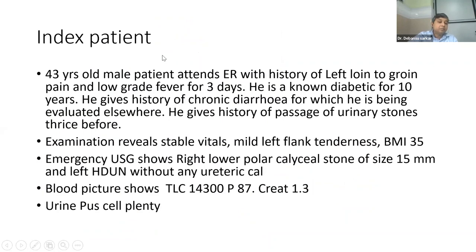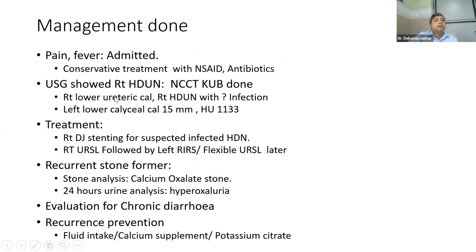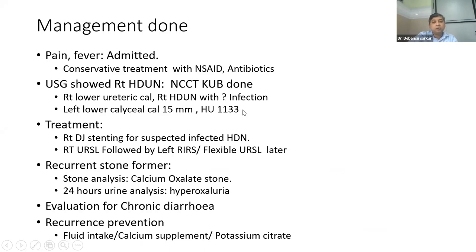Returning to our index patient — how was he treated? This patient had pain, fever, and signs of sepsis, so he was admitted, managed conservatively with IV fluids and antibiotics. He had one-sided inferior caliceal stone and the other sided hydroureteronephrosis. To know what caused the hydronephrosis, a CT was done in emergency, which showed a right lower ureteric calculus — that was the reason for hydronephrosis which was missed on USG. There were signs of infection on CT. The opposite side showed a lower caliceal stone of 15 mm with a Hounsfield unit of 1133. So CT helped dictate the management.